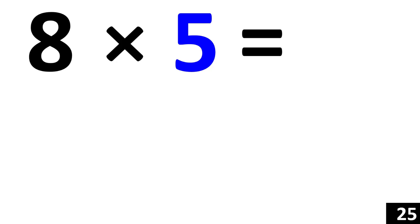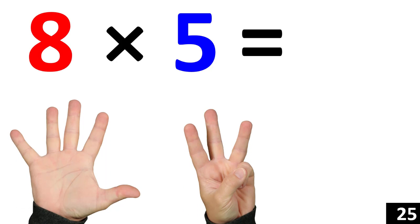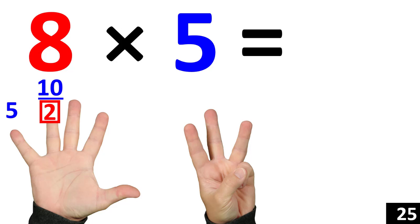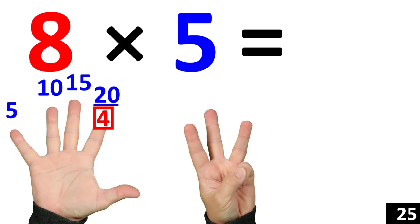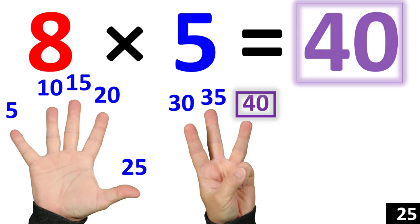And lastly, 8 times 5 is the same thing as counting by 5 eight times. 5. 10. 15. 20. 25. 30. 35. 40. 8 times 5 is equal to 40.